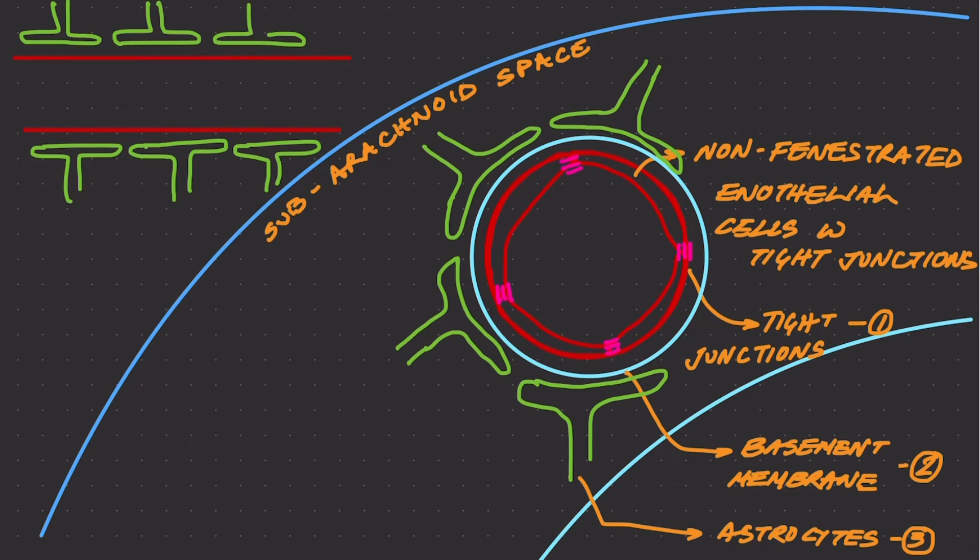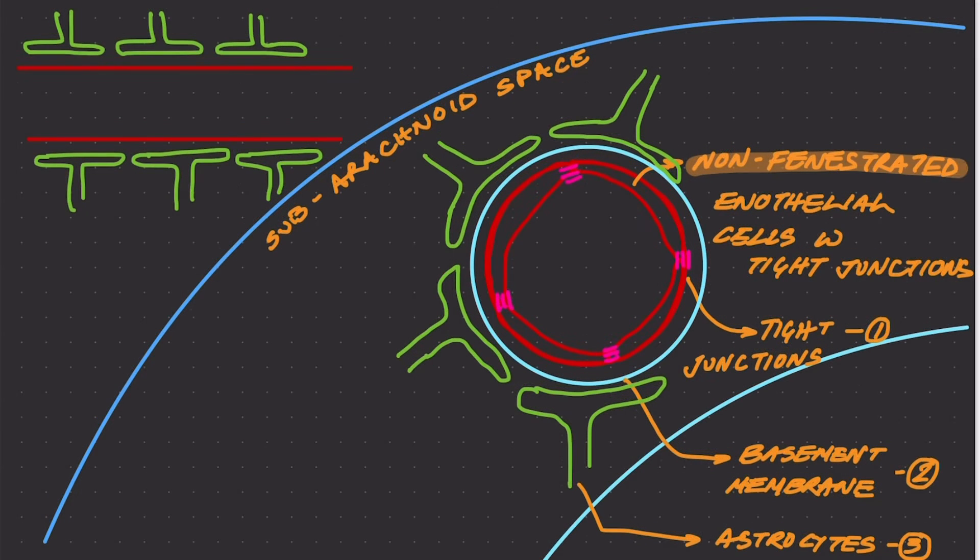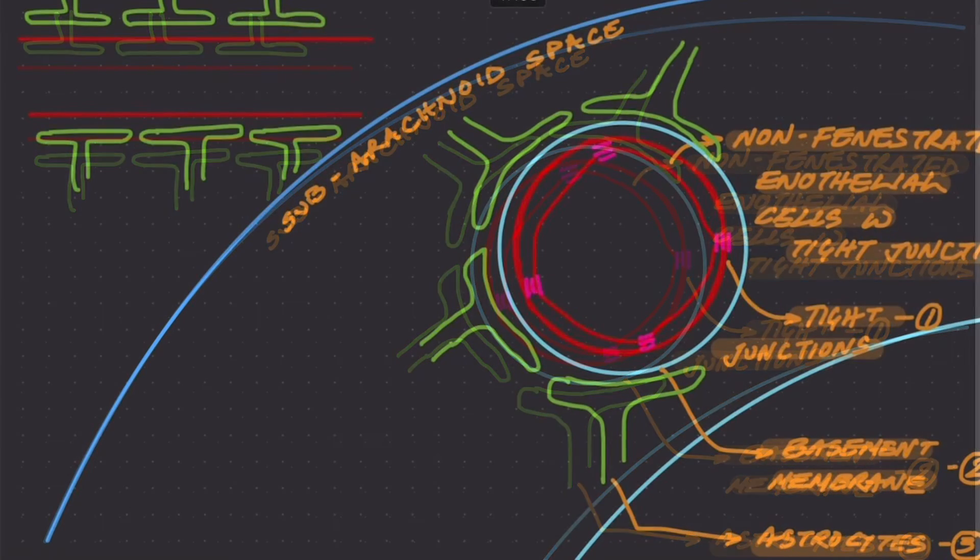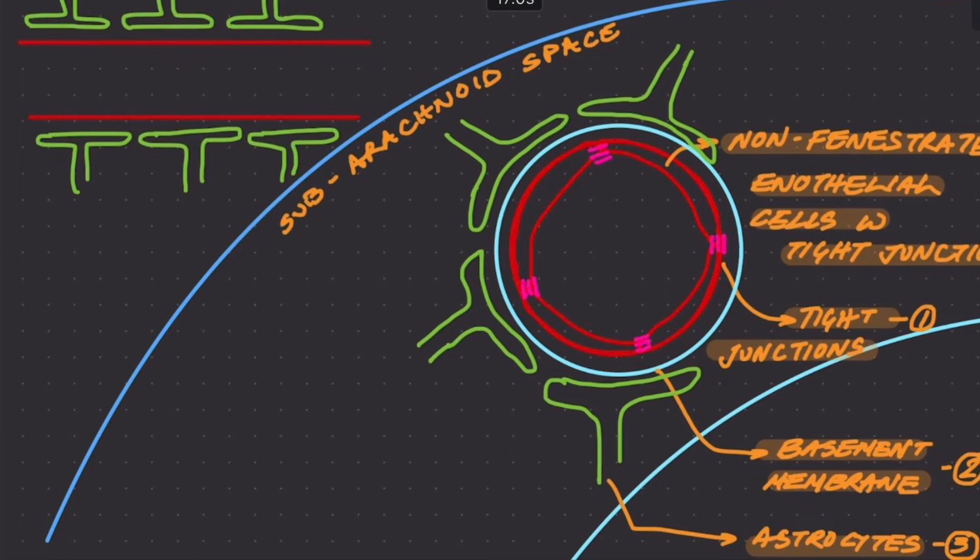So finally, the blood-brain barrier would be composed of the non-fenestrated endothelial cells with tight junctions, followed by the basement membrane, and finally, the astrocytes would complete the entire structure of this blood-brain barrier.